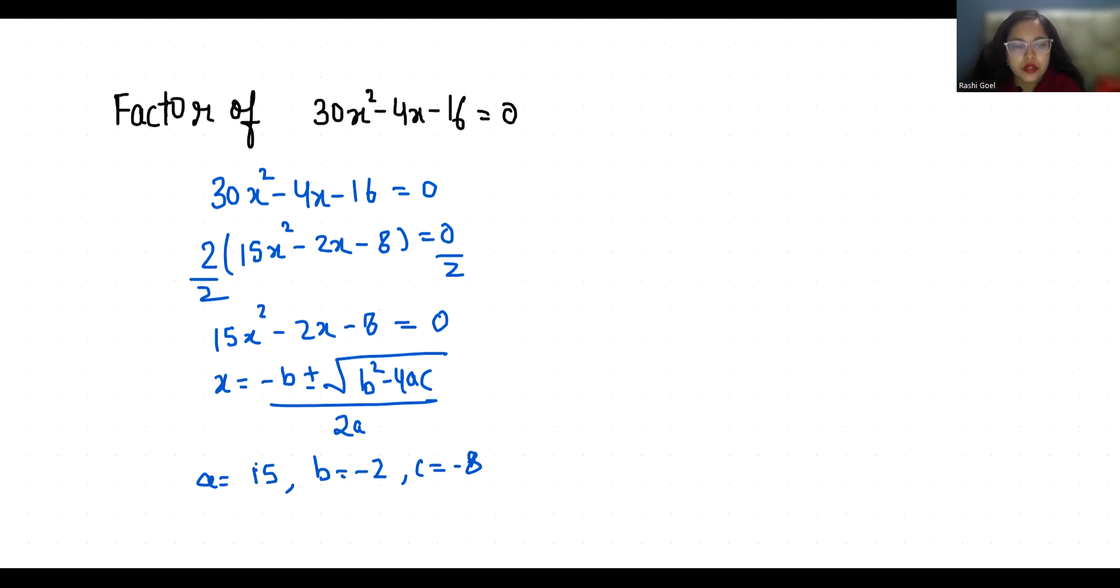So x = -(-2) ± √((-2)² - 4(15)(-8)) / (2)(15). This equals 2 ± √(4 + 480) / 30.